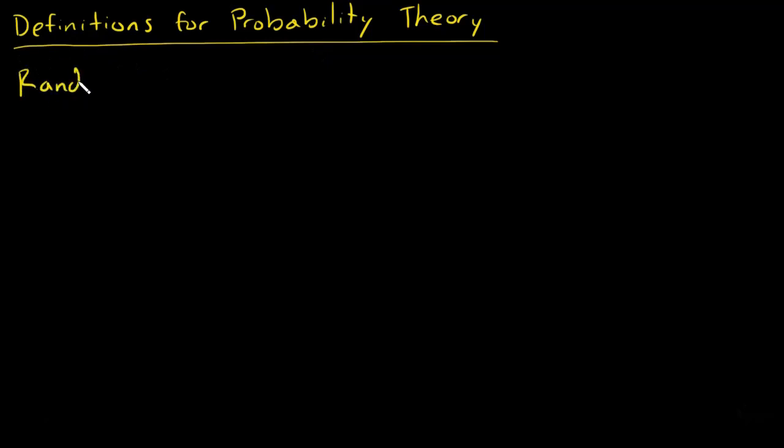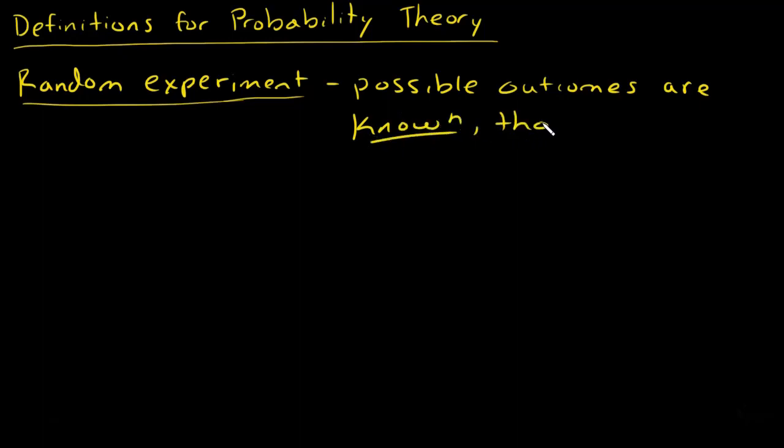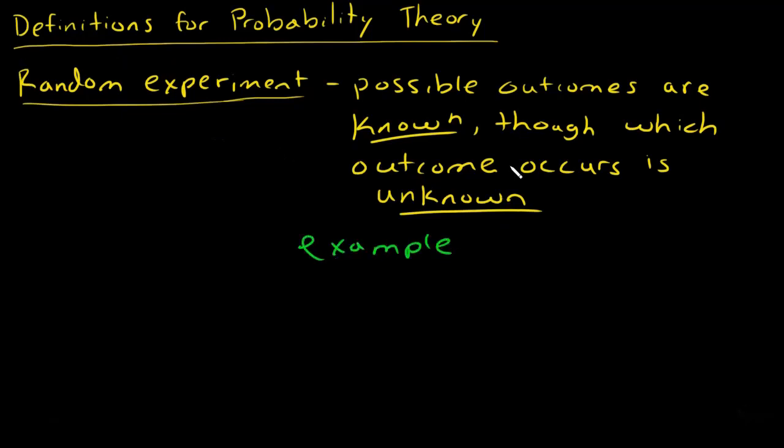Starting with random experiment. A random experiment in probability theory, when we use this term, what we're referring to is a situation where the possible outcomes are known, though which outcome actually occurs is unknown. The outcome that actually occurs is random. For example, we could be rolling a die.